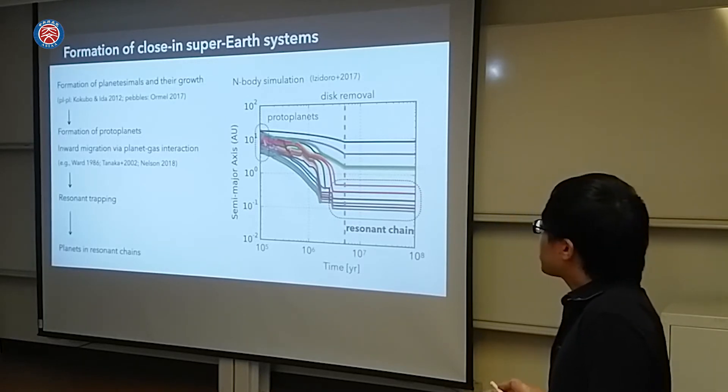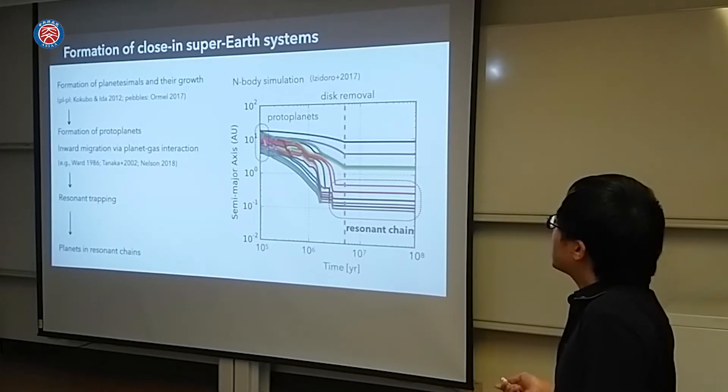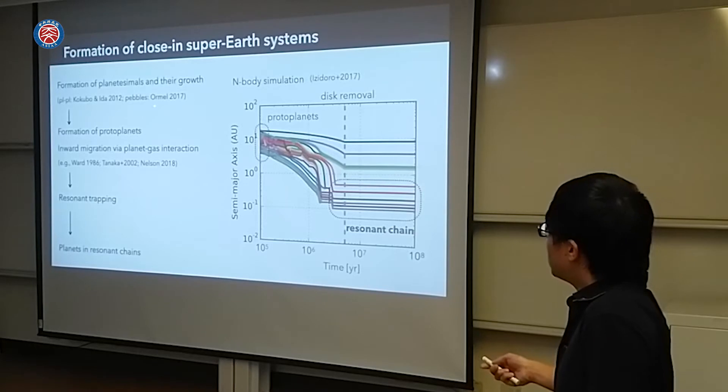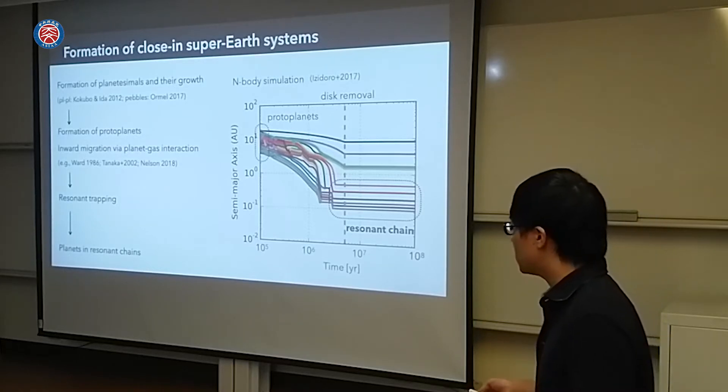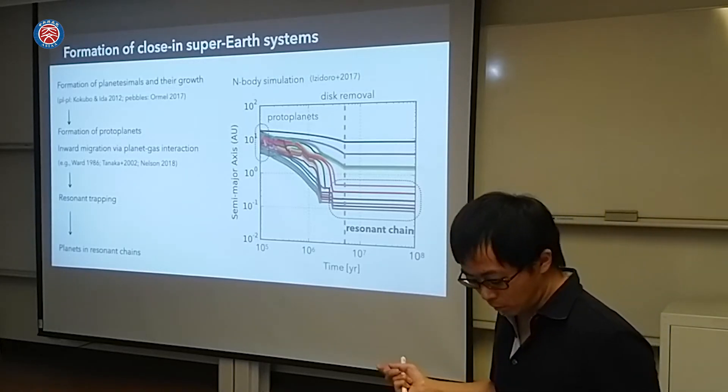This is one planetary super-Earths formation scenario: formation of planetesimals, planetesimals grow up, and protoplanets are formed. We want to migrate and resonant trapping. Planets in resonant chains, such systems are formed.